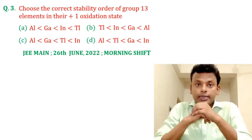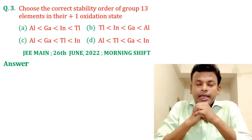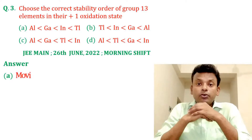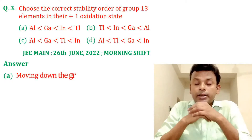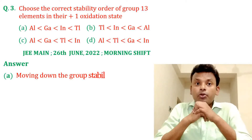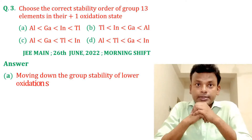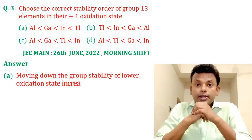This question was set in JEE Main morning shift. Answer: option A is the correct answer. Moving down the group, the stability of the lower oxidation state increases.